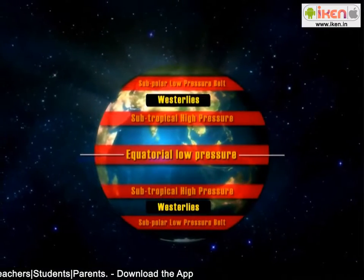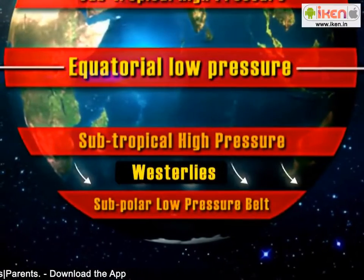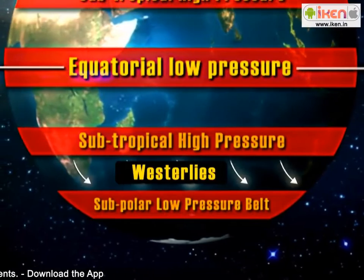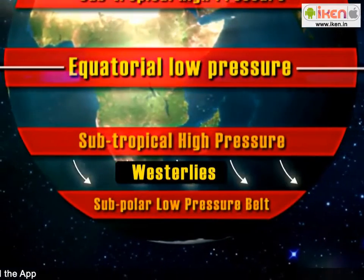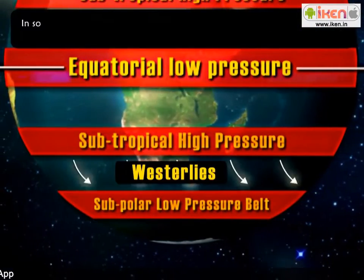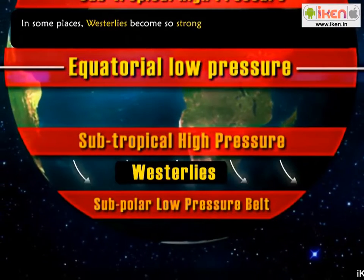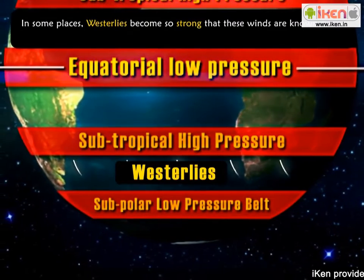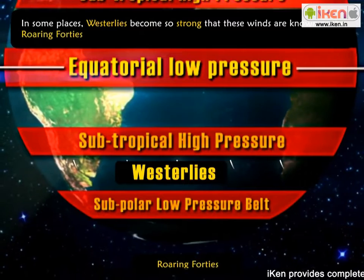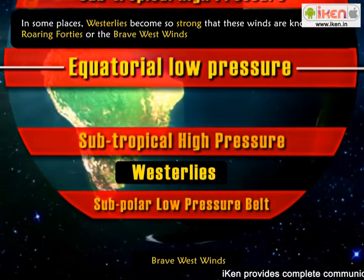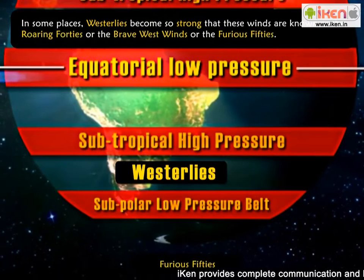Westerlies are more constant and strong in the southern hemisphere because there are no large land masses to interrupt them. In some places they become so strong that these winds are known as the Roaring Forties, the Brave West Winds, or the Furious Fifties.